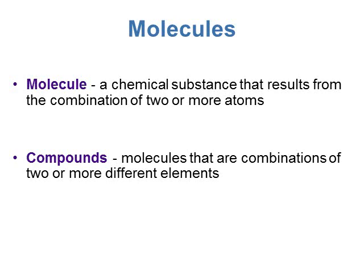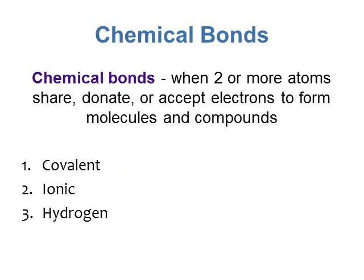So we have matter, which is made up of different types of atoms. Specific atoms are called elements. We're going to take these different atoms and combine them to form molecules — a molecule is a chemical substance that results from the combination of two or more elements. We can also create compounds, which are molecules made of two or more different elements. For biology, I'll use molecules and compounds interchangeably. We bond atoms together using chemical bonds, where atoms will share, donate, or accept electrons.